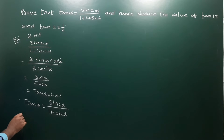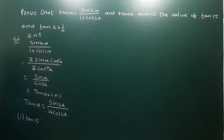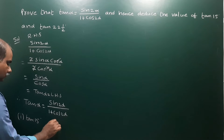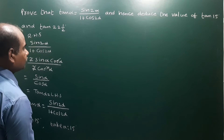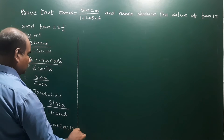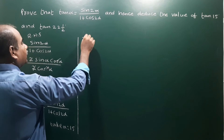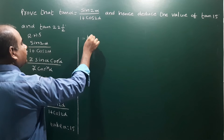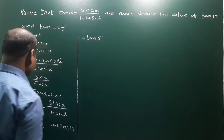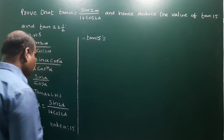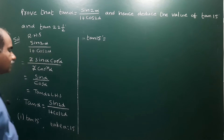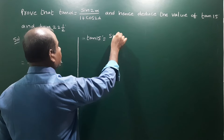First, find tan 15°. Take α = 15°. Then tan 15° equals sin(2 × 15°) by (1 + cos(2 × 15°)), which gives sin 30° by (1 + cos 30°).